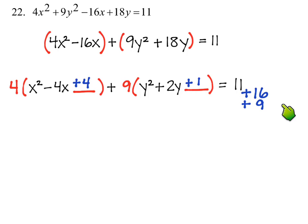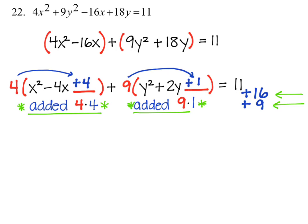You might be wondering why did I write plus 16 and plus 9 here, when it looks like I only added 4 and 1. But I added the 4 and 1 to the groups, but to the equation I actually added 4 times 4, because everything in this group is being multiplied by 4.